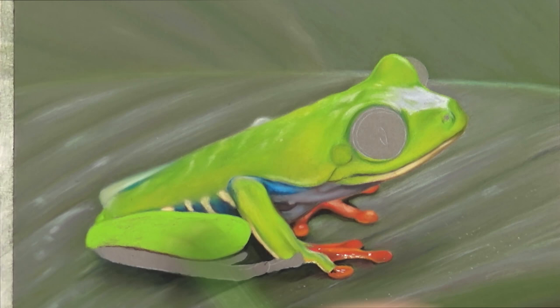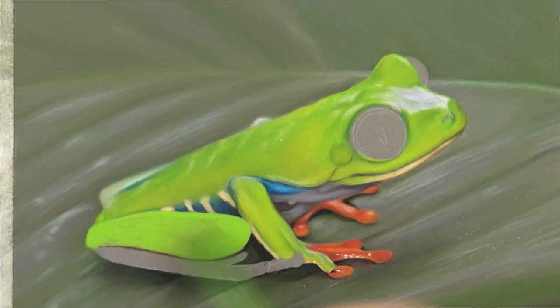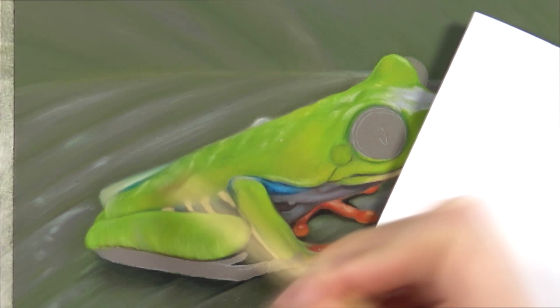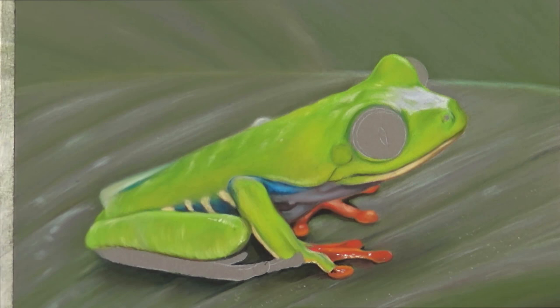Then for the hind leg, I used exactly the same technique again. So once you have it sorted, once you know how to work, you can use the same techniques on the whole drawing. So starting out with green for a base tone, then glazing yellow on top of it. Glazing some brown on top of it for the shadow parts. Then you get this effect quite quickly.